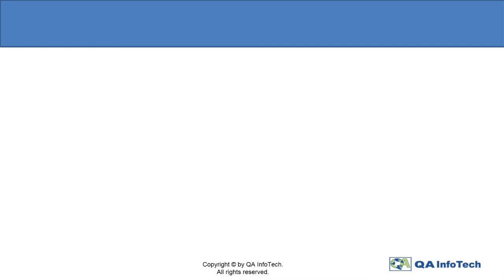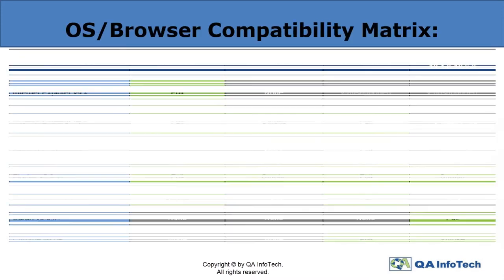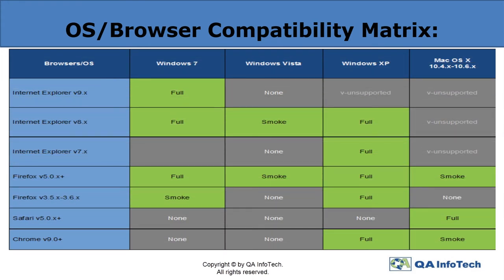A sample metric illustrates browser OS compatibility — for example, IE version 9.x is fully compatible with Windows 7, but this version is not supported in Windows XP. Whereas with Firefox version 5.0.x and above, only a smoke test to validate basic functionalities has been performed in Windows Vista, but it is fully compatible with Windows XP.